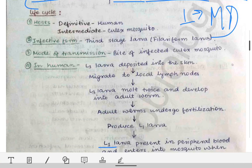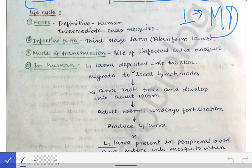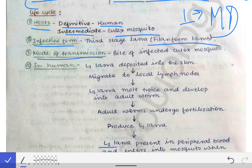Now coming to the life cycle of Wuchereria bancrofti — or for that matter Brugia malayi or Brugia timori. The life cycle consists of two hosts: a definitive host and an intermediate host. Unlike malaria where the definitive host was the female Anopheles mosquito, here the definitive host is the human. The intermediate host is the Culex mosquito. The infective form is the filariform larva (L3), and the mode of transmission is the bite of the Culex mosquito.